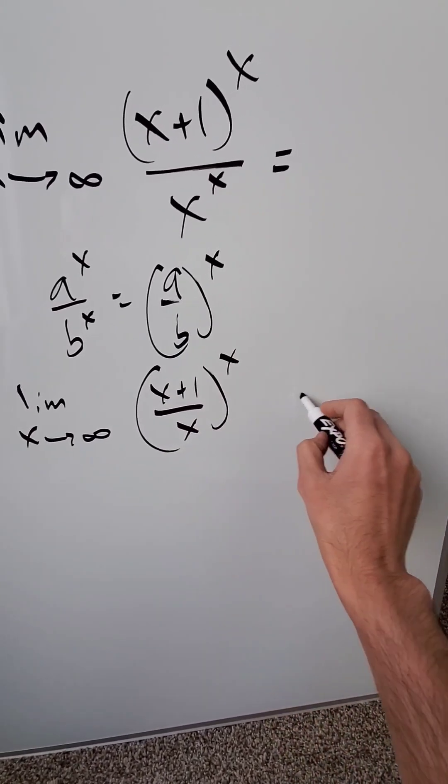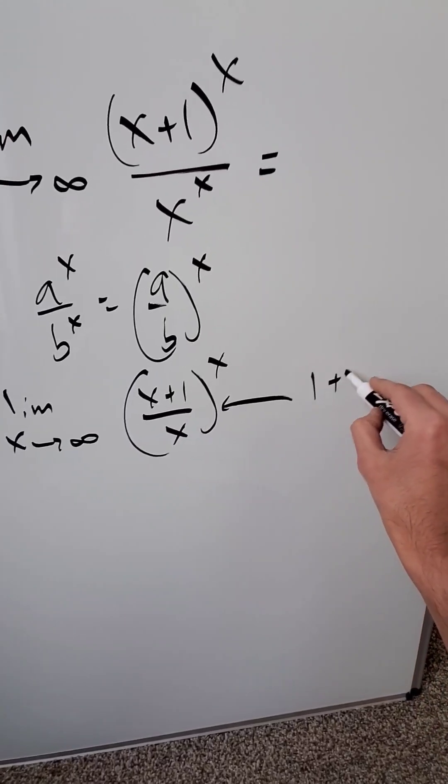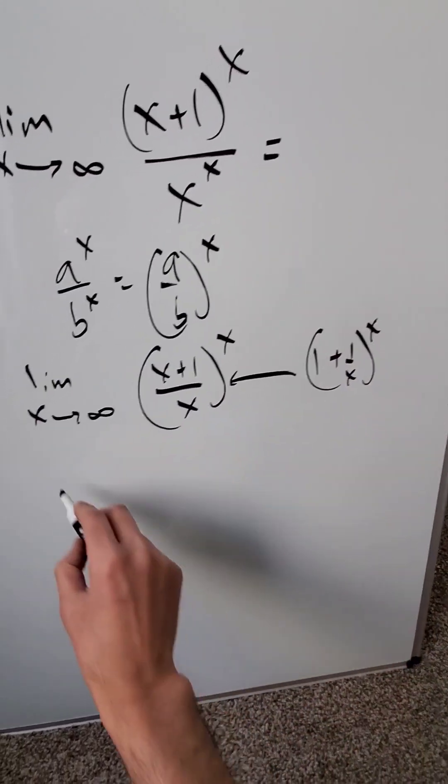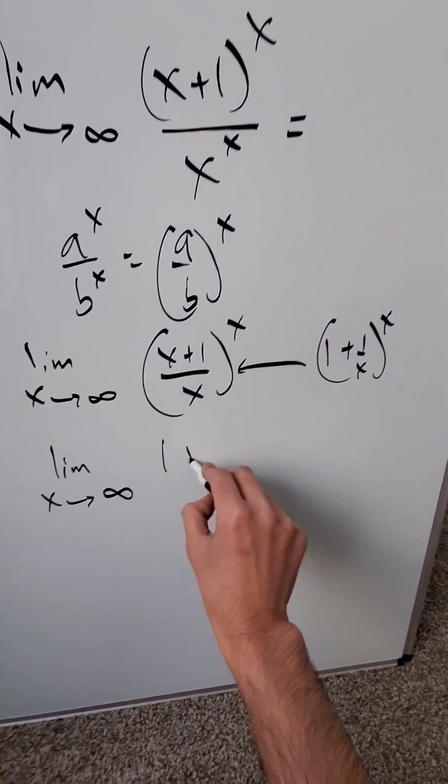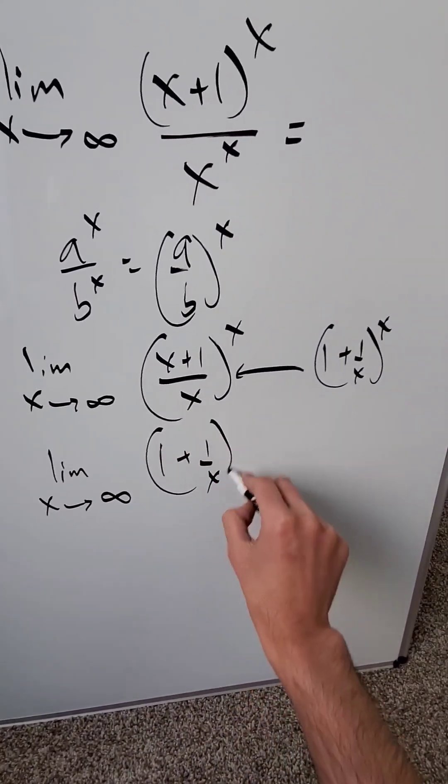But this rational function can be rewritten. You're looking at 1 plus 1 over x to the power of x. That's exactly what your limit is becoming in terms of a rewritten expression.